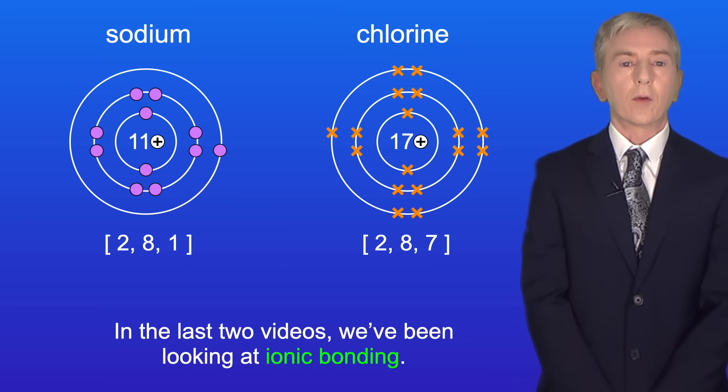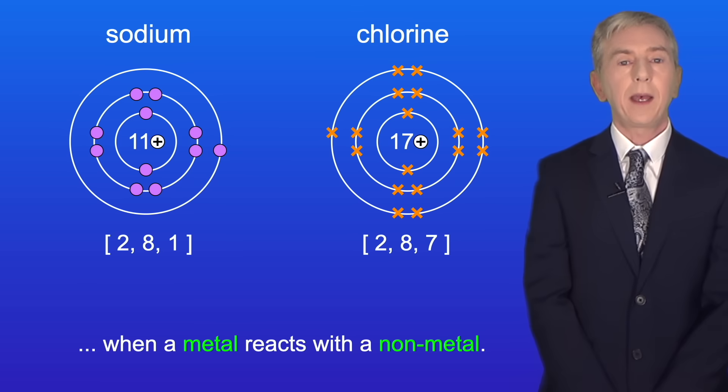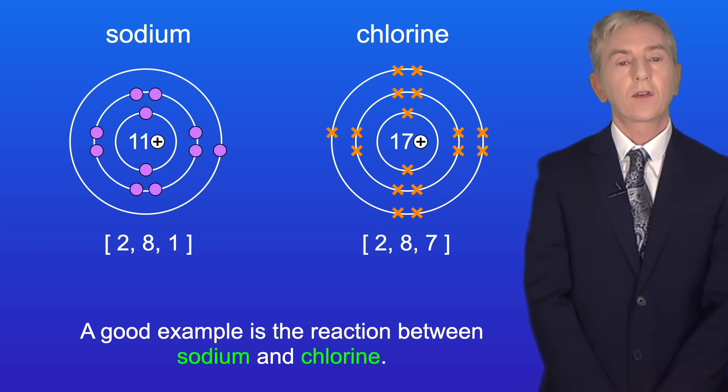In the last two videos, we've been looking at ionic bonding. Remember that ionic bonding takes place when a metal reacts with a non-metal. A good example is the reaction between sodium and chlorine.